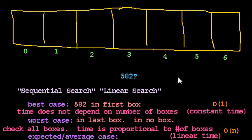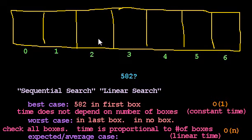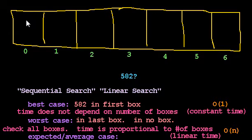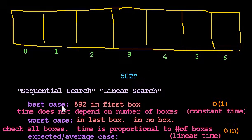In the last video, we were trying to find a value — apparently the value 582 — in one of these boxes. These boxes conceal secret numeric data, and one of them happens to conceal 582, possibly, possibly not. We want to determine if 582 appears in one of those boxes. And we found if we just start with box 0 and try box 1, box 2, box 3, the time to find 582 — whether it's there or not — will be proportional to the number of boxes.